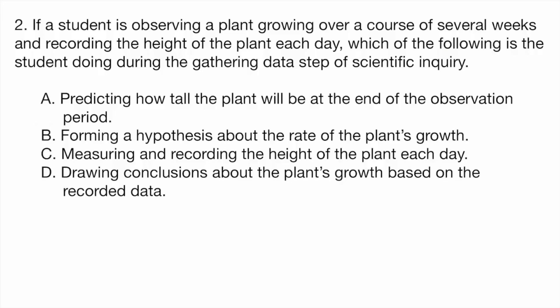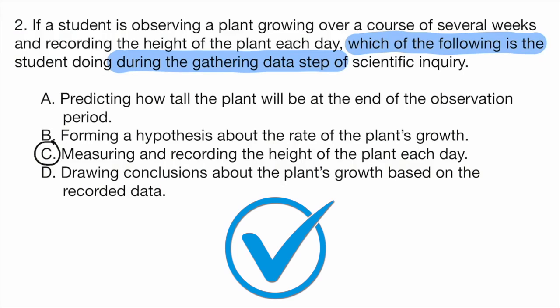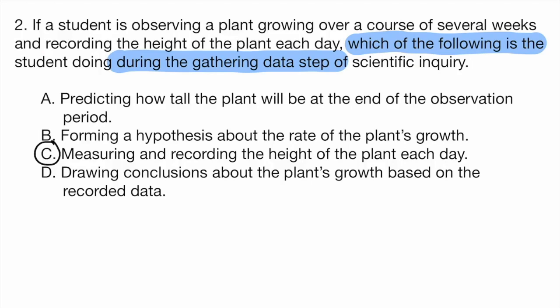What is the question asking? It's asking which of the following is the student doing during the gathering data step. The correct answer is choice C, measuring and recording the plant height each day. Our key terms here are measuring and recording — that is a form of gathering data. Option A is making a prediction, option B is forming a hypothesis, and option D is drawing conclusions. Those are all different steps of the scientific method, whereas option C is specifically the gathering data step.